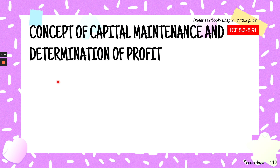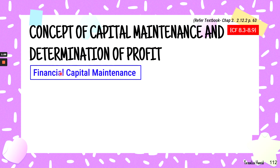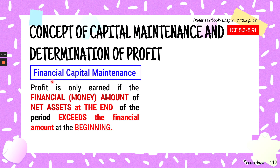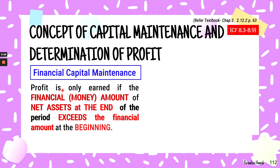The next concept is capital maintenance and determination of profit. Under financial capital maintenance, profit is only earned if the financial or monetary amount of net assets at the end of the reporting period exceeds the net assets at the beginning of the reporting period.